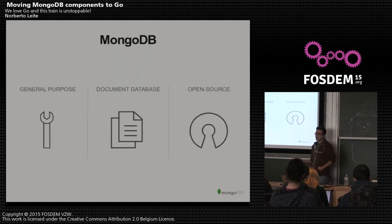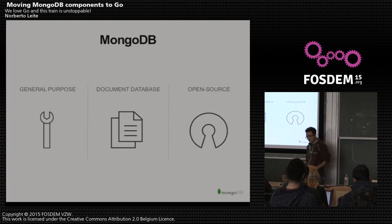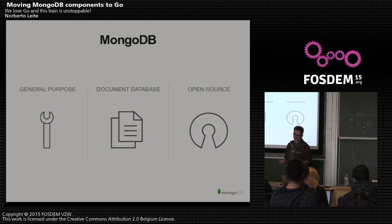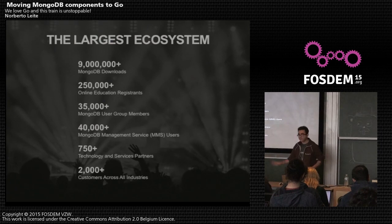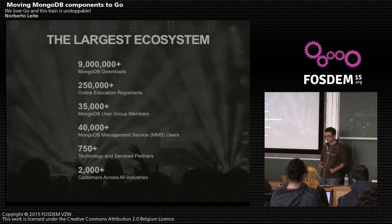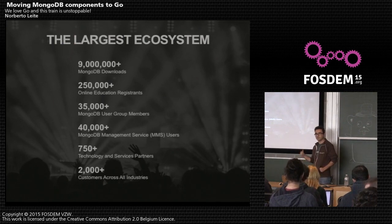MongoDB is an open source project - otherwise we wouldn't be allowed to be at FOSDEM. It's a document-oriented general purpose database, meaning you could do a lot of stuff with it. There's a lot of use cases and it's pretty good. This reflects in these numbers - more than 9 million downloads. That number is going to be essential for future slides in this talk, so hold on for that.